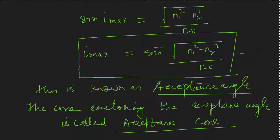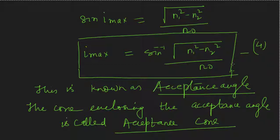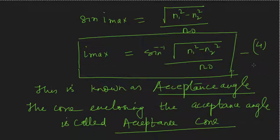So my angle of incidence must be within i_max so that the angle at the core-clad interface is more than the critical angle and light propagates inside the fiber by total internal reflection. If I choose my angle of incidence within this condition, and the light moves from denser to rarer medium, both conditions together are sufficient for total internal reflection to happen inside the fiber.